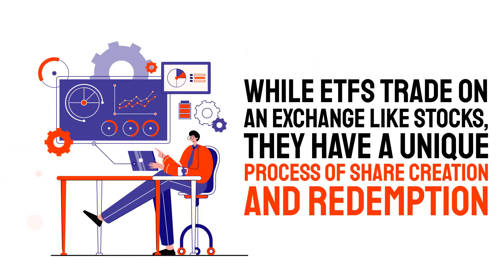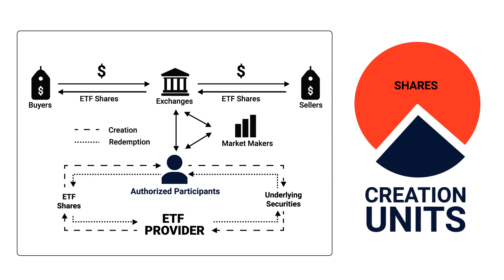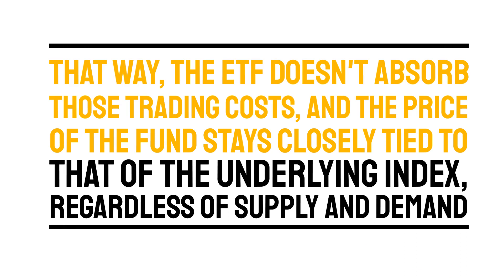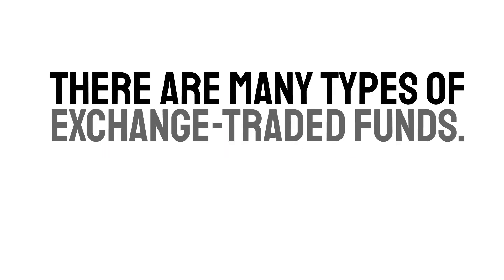A third party known as authorized participants (APs) handles the buying and selling of the ETF's underlying securities, generally in large chunks of shares known as creation units. That way, the ETF doesn't absorb those trading costs and the price of the fund stays closely tied to that of the underlying index, regardless of supply and demand.